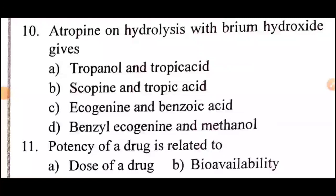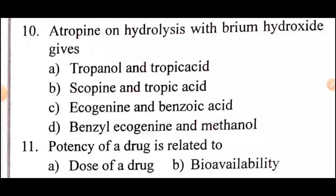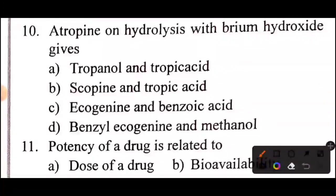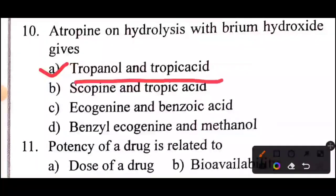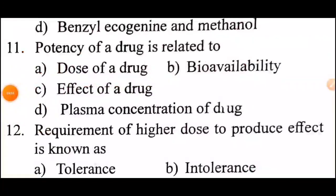Question 10: atropine on hydrolysis with barium hydroxide gives? Answer: option A, tropenol and tropic acid.